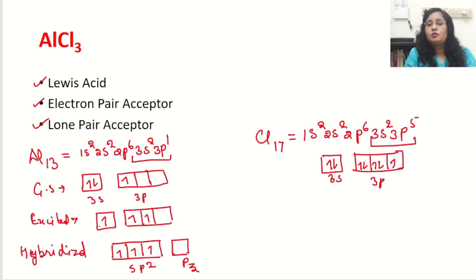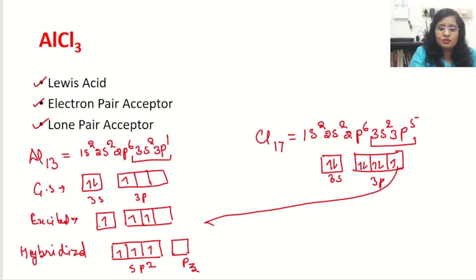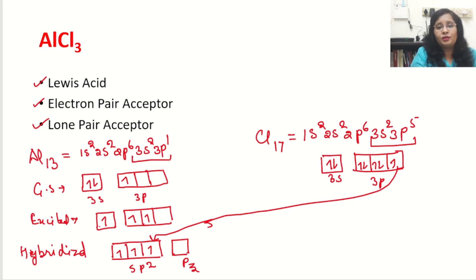In this condition, one electron of the chlorine atom will attack the hybridized sp² orbital of aluminium to make a pair with the electron present there. One electron mingles with the aluminium electron. In the same way, three chlorine atoms will come and make pairs with the three unpaired electrons of aluminium.